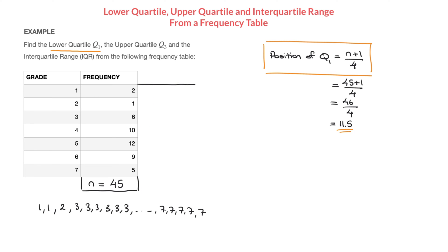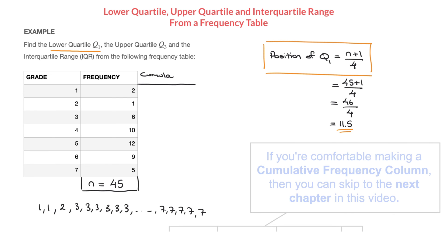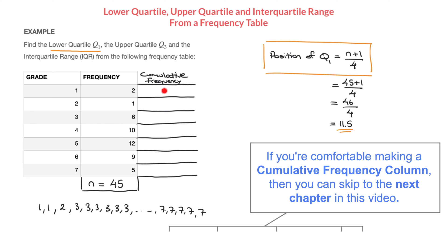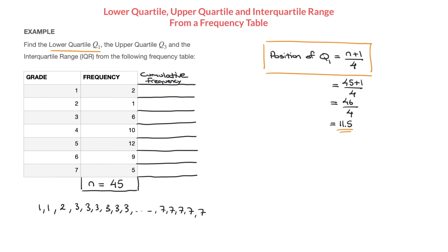We add a cumulative frequency column to our table. The first cumulative frequency always equals the first frequency, so that's 2. Each subsequent cumulative frequency equals the previous one plus the next frequency: 2 + 1 = 3; 3 + 6 = 9; 9 + 10 = 19; 19 + 12 = 31; 31 + 9 = 40; 40 + 5 = 45. Notice that the last cumulative frequency equals n, which should always be the case.